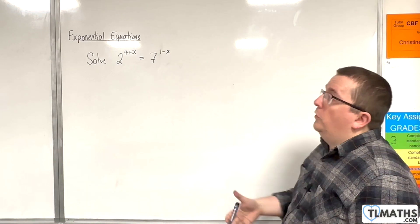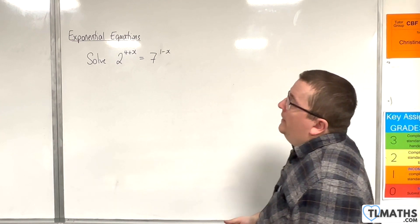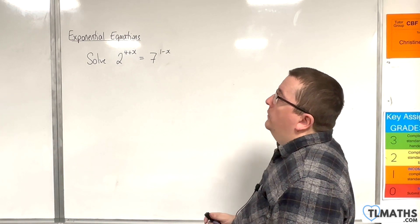So in this video we're going to solve 2 to the power of 4 plus x equals 7 to the 1 minus x.